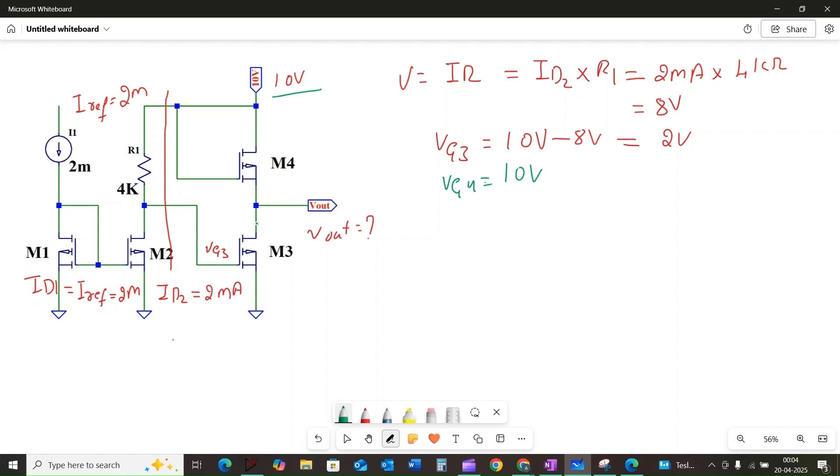Now for the crucial part. The MOSFETs M3 and M4 are in series, which means the drain current of M3, ID3, must be equal to the drain current of M4, ID4. So we can state that ID3 is equal to ID4. Since the MOSFETs are in saturation and all are identical,